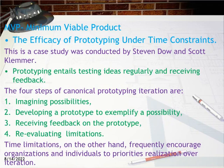Prototyping entails testing ideas regularly and receiving feedback. The four steps of canonical prototyping iteration are: 1. Imagining possibilities, 2. Developing a prototype to exemplify a possibility, 3. Receiving feedback on the prototype, 4. Re-evaluating limitations. Time limitations, on the other hand, frequently encourage organizations and individuals to prioritize realization over iteration.